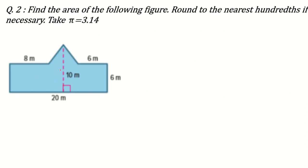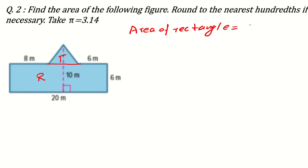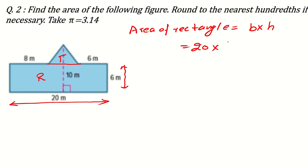Next question: find the area of the following figure. If we join a straight line across, the lower portion becomes a rectangle and the upper portion is a triangle. Area of rectangle equals base times height, or length times width. The side is 20 meters and the height is 6 meters, so 20 times 6 equals 120 meters square.